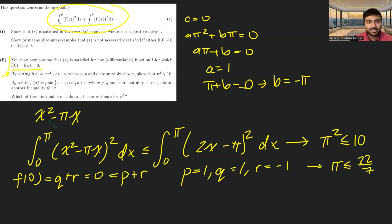And now I guess the question is, well, then which one of these inequalities is better? Well, this one's π² ≤ 10. This one here is equivalent to π² being less than or equal to (22/7)². And that's 484/49.